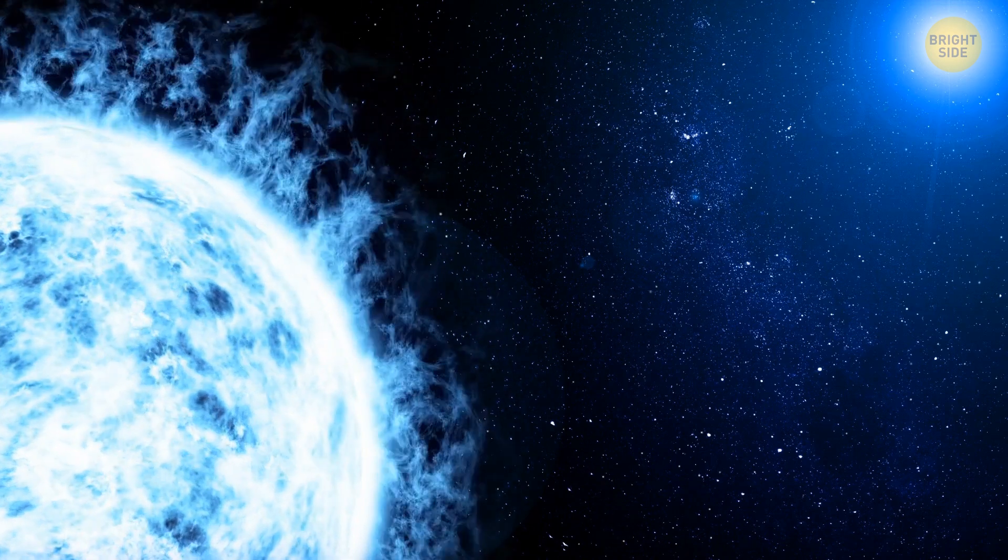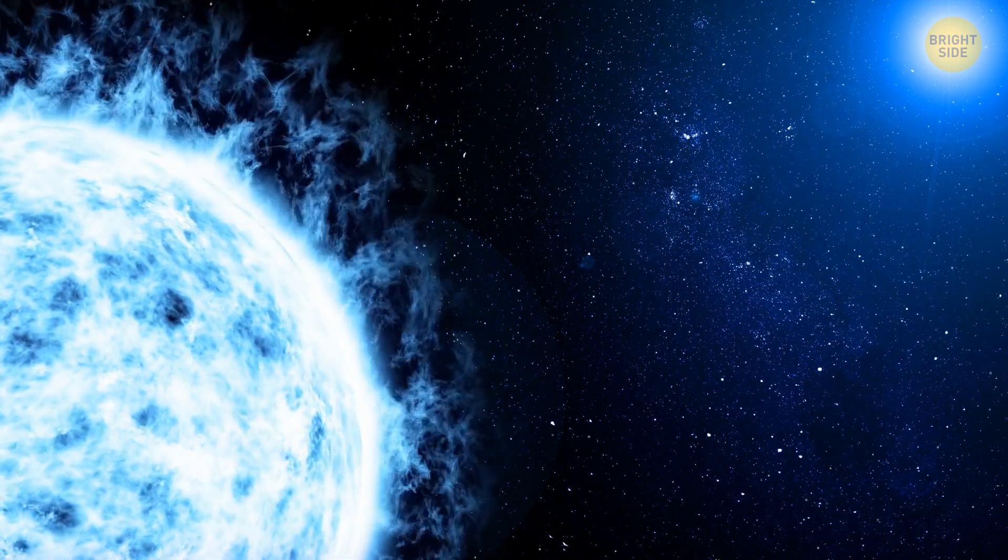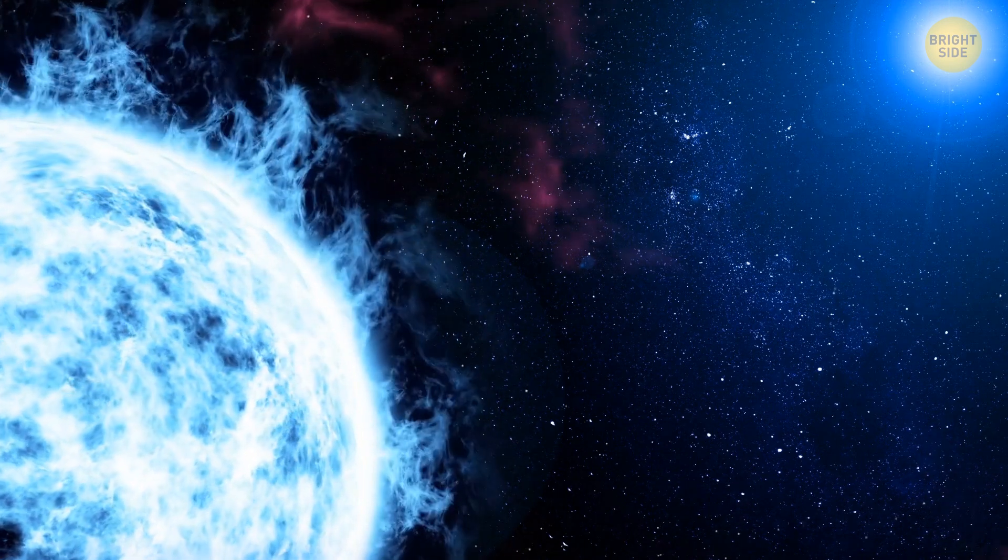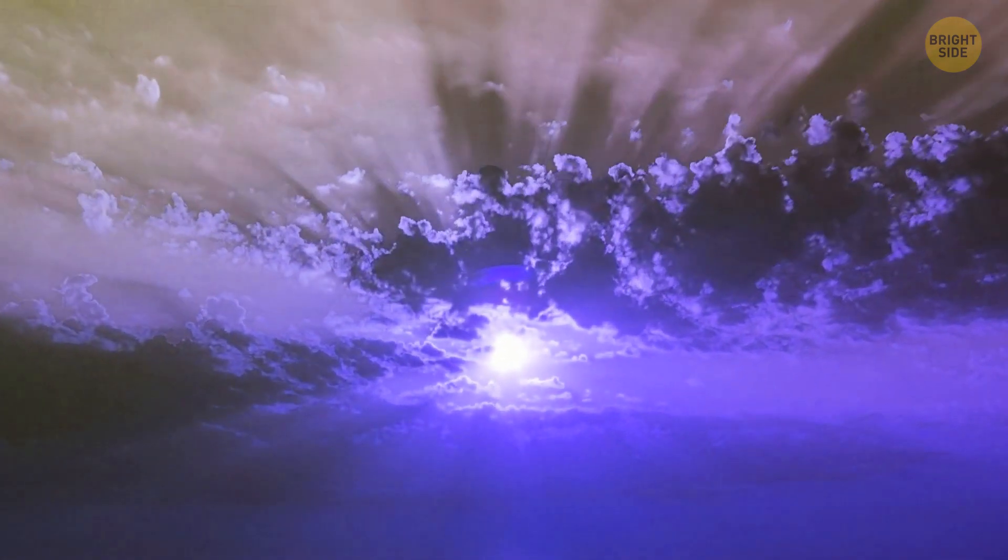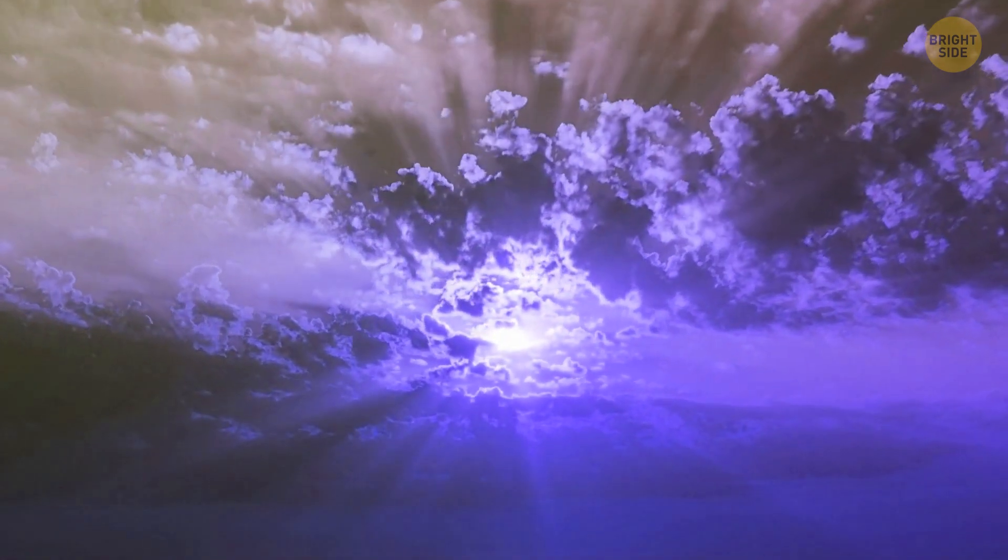The planet's host star doesn't emit a lot of high-energy light. But since WASP-107b is so loose, the light can penetrate deep into its atmosphere. This creates sulfur dioxide, that smell when you light a match. In other words, it's a fluffy planet that rains sand and smells like matches.